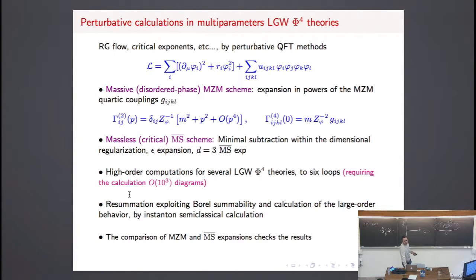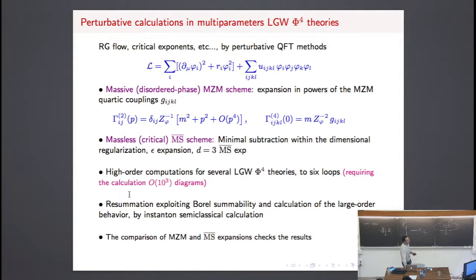Just to give you an example, this is a general theory. One can use the same framework used in the case of O(N) theories: defining the mass m, the inverse correlation length, defining renormalized couplings g. Again, one can perform high-order computations — for the theories I showed you, calculations have been done up to five or six loops, depending on the type of calculation.